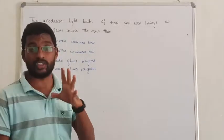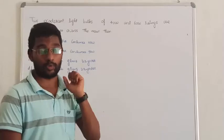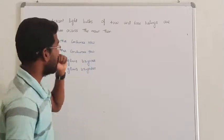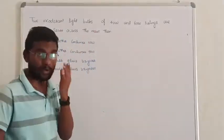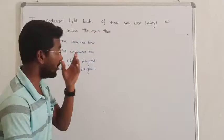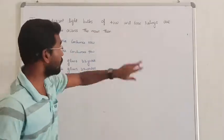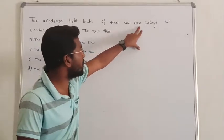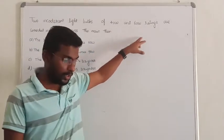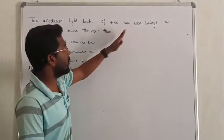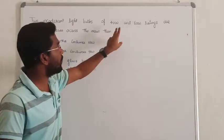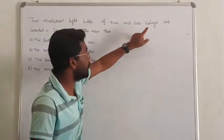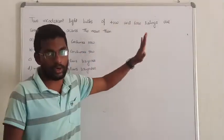If you observe a video, a load is written. Like what we do, we have two loads. One is a 40-watt bulb. One is a 60-watt bulb. When the two bulbs have ratings, the first bulb rating is 40-watt and the other bulb rating is 60-watt.